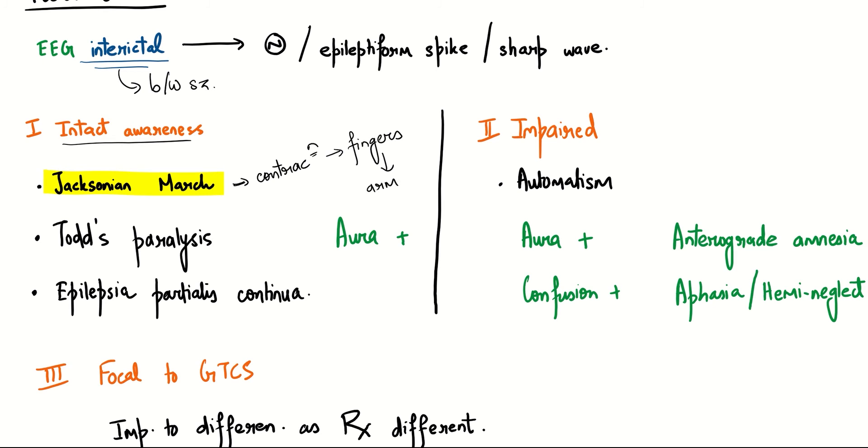We also have Todd's paralysis, which is characteristic weakness of the involved region. We also have epilepsia partialis continua, which means that the seizure will go on for days, though this is rare. Also, aura is present.